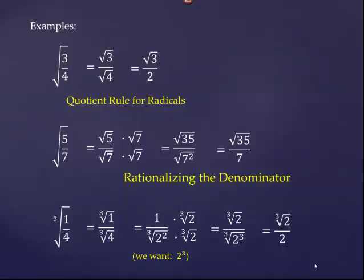So what you want to do is let the index be your guide. The index tells you how many factors need to be in that radical to get rid of it. Look at how many factors are already there and make up the difference. And don't forget: whatever we do in the denominator, we need to do the same thing in the numerator. That will take care of the issue of a fraction inside a radical.